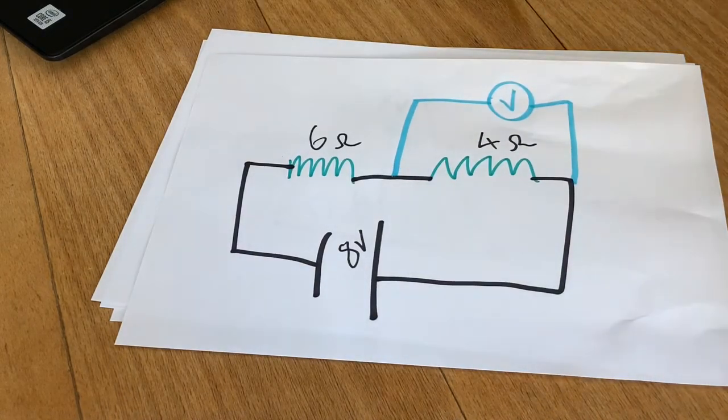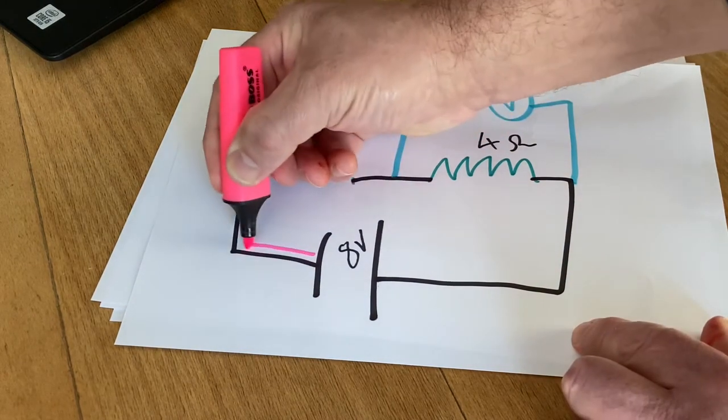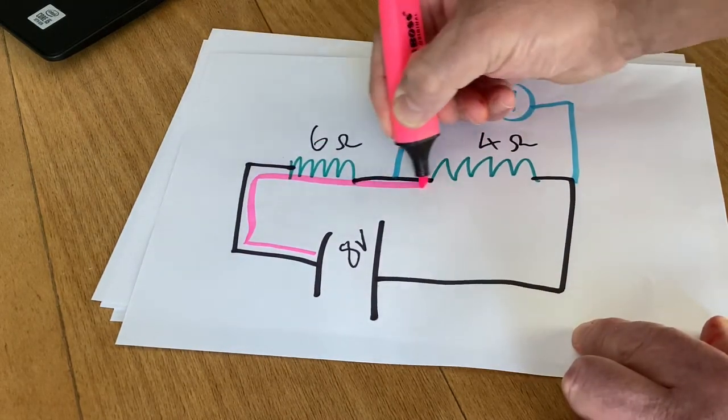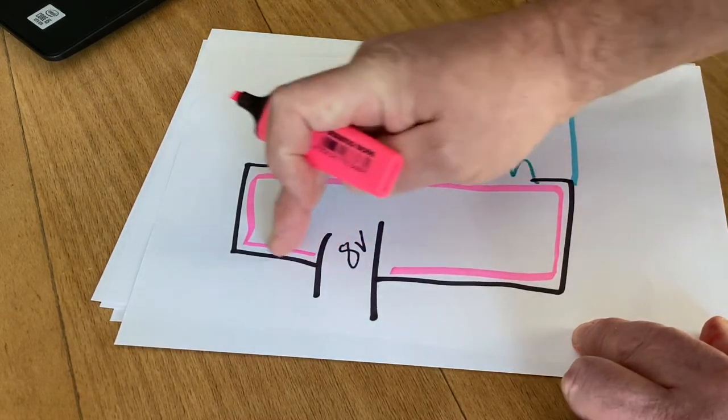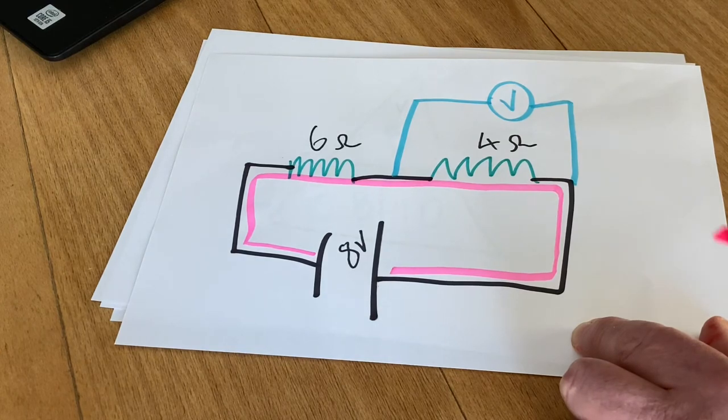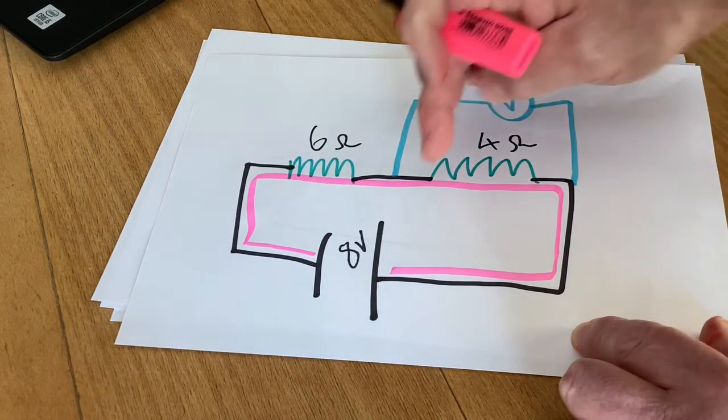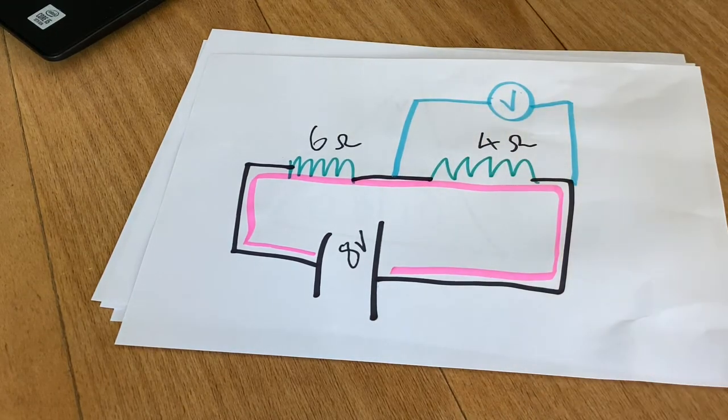So in this part of the circuit, or in fact in the whole circuit, I should say, the current flowing in the complete circuit is 0.8 amps. So that means that the current flowing in this part of the circuit is also 0.8 amps.